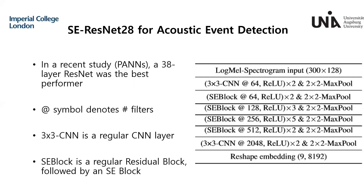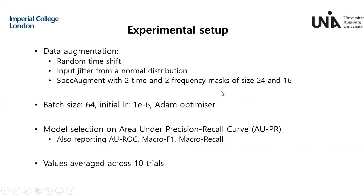The input clip representation of this core model is a log-mel spectrogram of 300 timeframes by 128 features. This is processed by a deep architecture consisting of both VGG-like and residual blocks. An SE block is a regular residual block followed by a squeeze and excitation block. This model outputs a sequence representation of nine timeframes by 8,192 length features. For data augmentation, we used random time shift on the positive clips, random input noise, and SpecAugment.